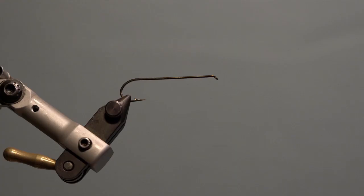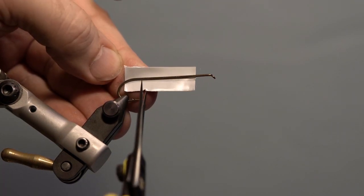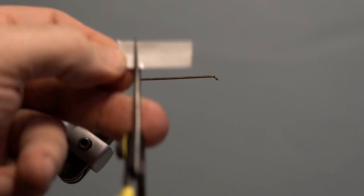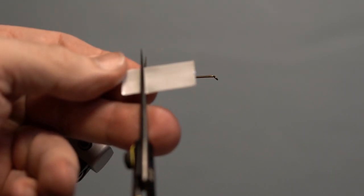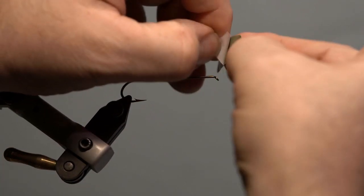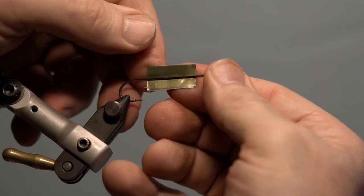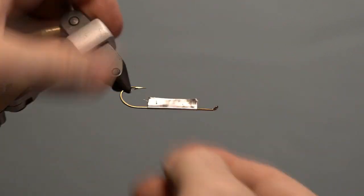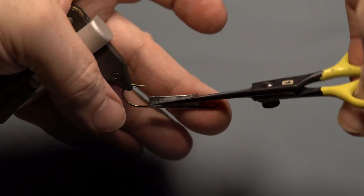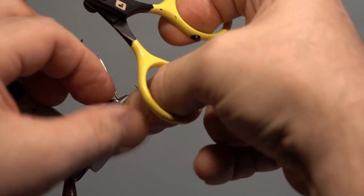The hook is a TMCO 300 size 6. First, measure the tape for the body. Start slightly behind the eye of the hook and even with the hook point. Peel off the backing and fold the tape over the hook where it was measured. Next, trim the tape into a belly shape using straight and curved scissors.